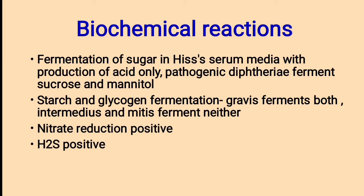Biochemical Reactions. Fermentation of sugars in Hiss serum media results in production of acid. Pathogenic diphtheria ferments sucrose and mannitol. Starch and glycogen fermentation is one of the important biochemical tests. Gravis ferments both starch and glycogen, while intermedius and mitis ferment neither starch nor glycogen. Gravis, intermedius, and mitis are the serotypes of Corynebacterium diphtheriae.